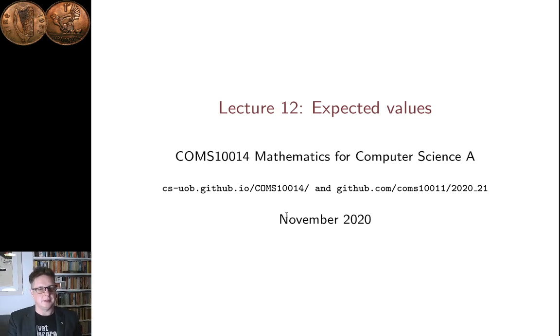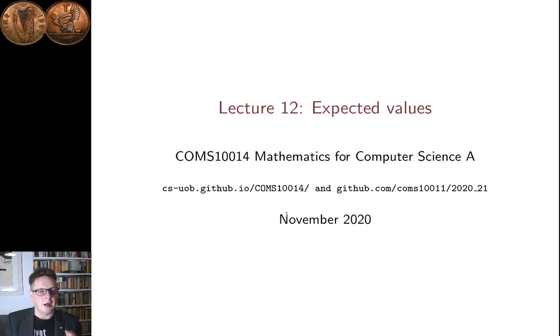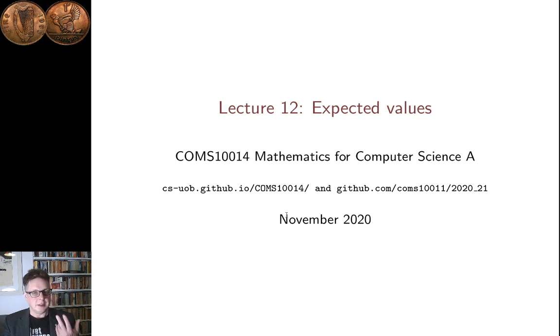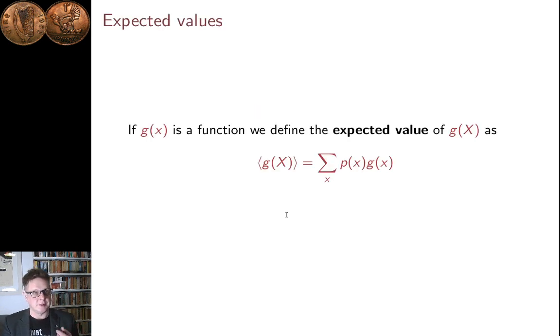Hi, I'm Conor Houghton. This is Lecture 12 in the Probability and Combinatorics section of our unit, Mathematics for Computer Science A. This lecture is about expected values.